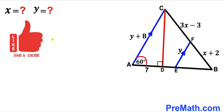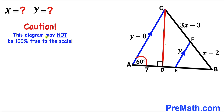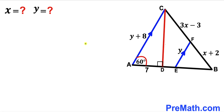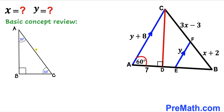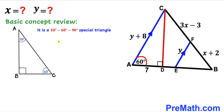Please don't forget to give a thumbs up and subscribe, and keep in mind that this figure may not be 100% true to scale. Let's get started. Before we proceed, let me go over the basic concepts. Let's focus on triangle ABC whose angles are 30 degrees, 60 degrees, and 90 degrees — we call this a 30-60-90 special triangle.